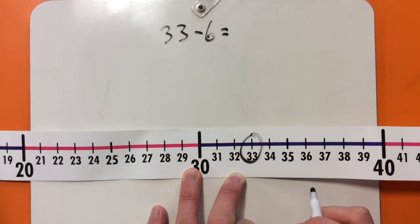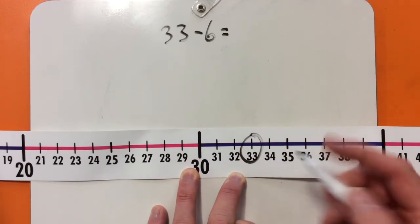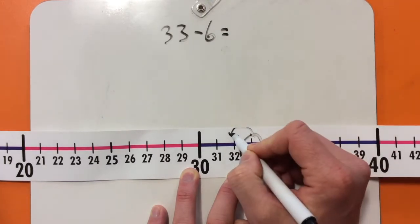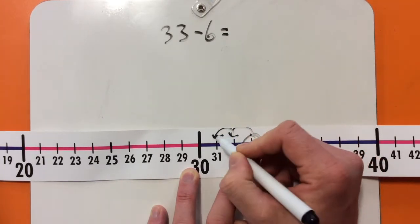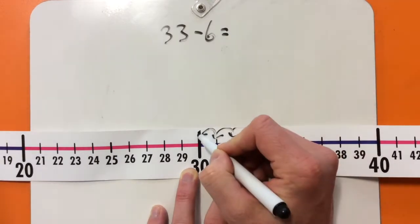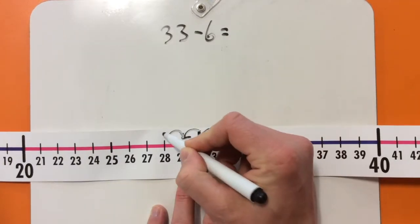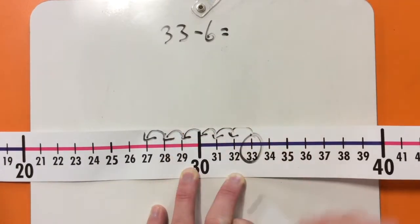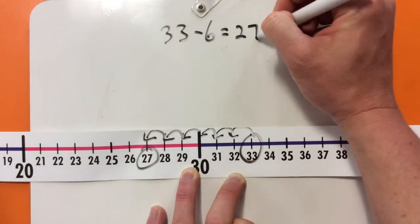Now, that doesn't mean that we start with 33, because we're already there. Counting back once is 32, twice is 31, 3 times is 30, 4 times, 5 times, 6 times, which gets us to 27.